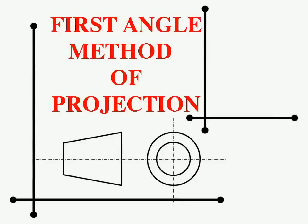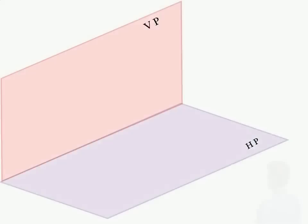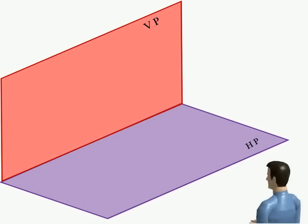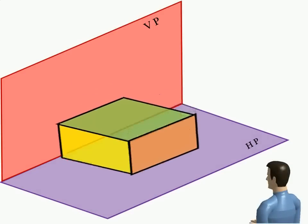In first angle method of projection, object is placed in first quadrant, that is in front of VP and above HP. The object lies between observer and plane of projection.